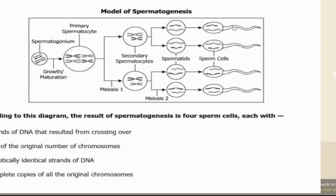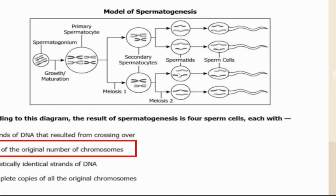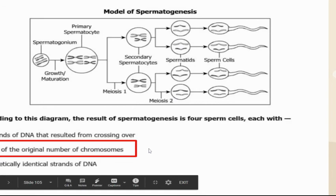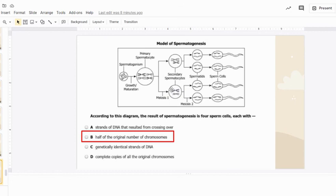Looking at the model of spermatogenesis — according to this diagram, the result of spermatogenesis is four cells. You can know this through the process of meiosis or by counting. These cells are halved, so they have half the number of chromosomes — these are haploid cells. Haploid cells have half the number of chromosomes.